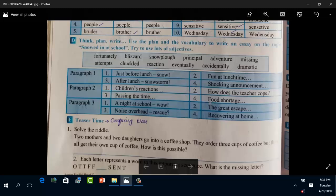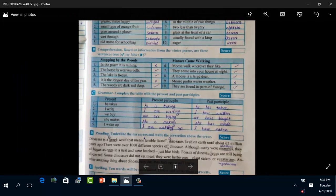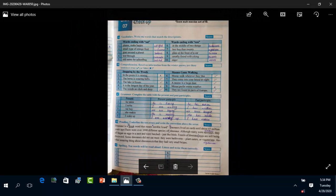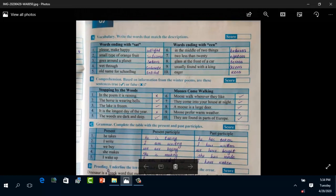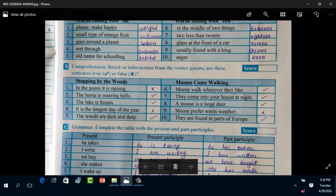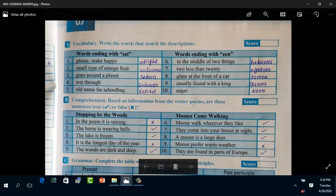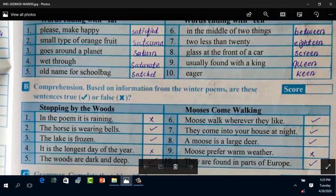Now coming towards the next page, that is check-up, page number 41. Question number A is vocabulary: write the words that match the description. Words ending with S-A-T: please make happy - satisfied. Small type of orange fruit - satsuma. Goes around a planet - satellite. Wet through - saturate. Old name for school bag - satchel. Now words ending with double E-N: in the middle of two things - between. Two less than twenty - eighteen. Glass at the front of a car - screen. Usually found with a king - queen. Eager - keen.